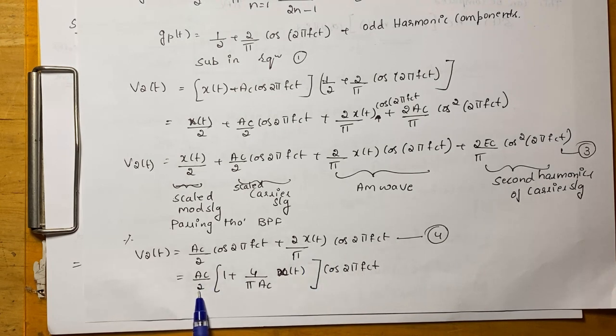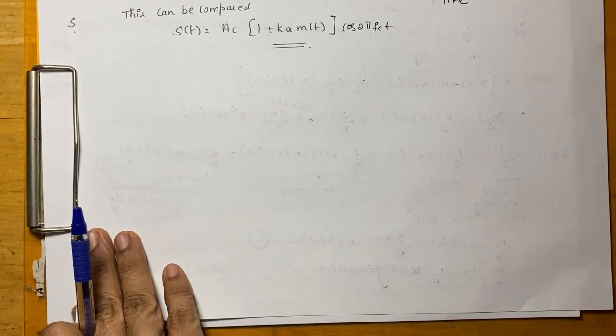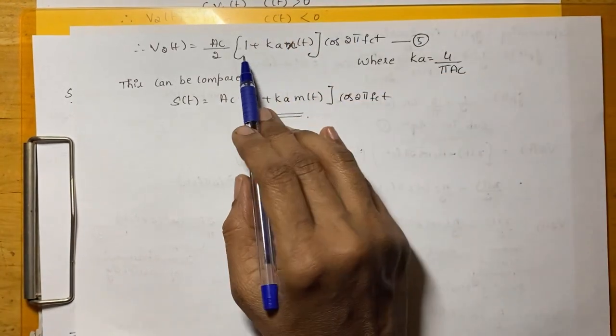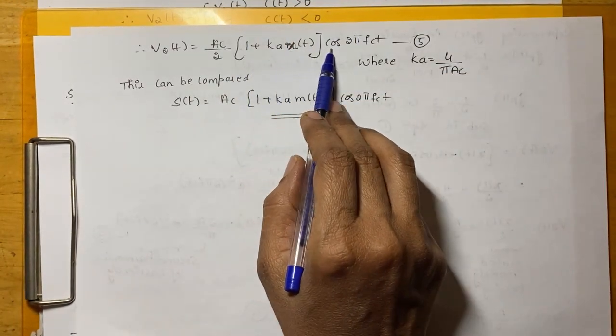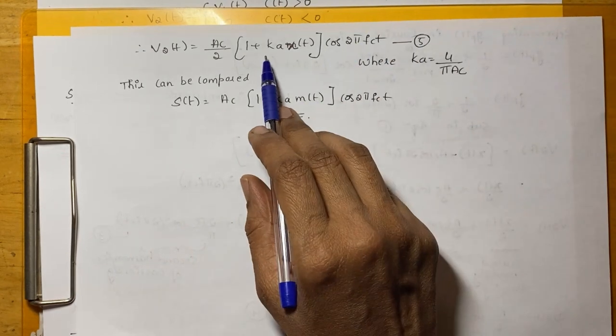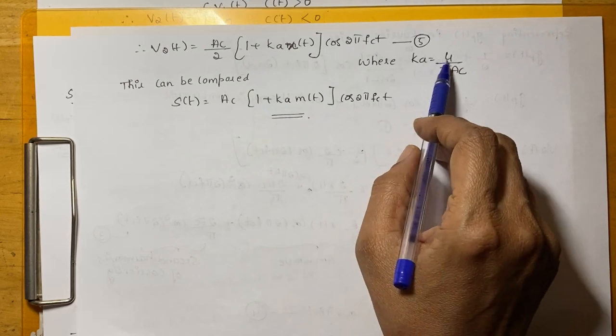Here taking this AC/2 common will be getting 1 + 4/(π AC) X(t) cos(2π FcT). So, here V2(t) = AC/2[1 + KA X(t)] cos(2π FcT). This is the final equation that has been required where K is nothing but a constant which is given by KA = 4/(π AC).